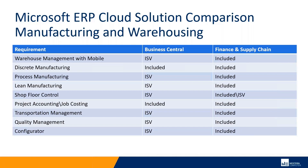Next is discrete manufacturing — having a discrete set of parts, a bill of materials, and routing. That's included in both systems. Finance and Supply Chain has more bells and whistles, but both do a good job. Process manufacturing — blending chemicals, co-products, byproducts, or beverages — typically requires a vertical or ISV in Business Central, while it's included in Finance and Supply Chain. Same with lean manufacturing: Kanbans and work streams are all included in Finance and Supply Chain, but typically require an ISV or customizations in Business Central. Shop floor control has great ISVs in Business Central, so most companies wouldn't choose Finance and Supply Chain just for that reason.